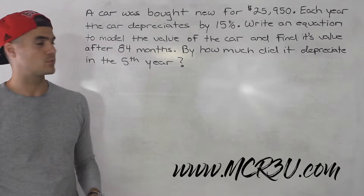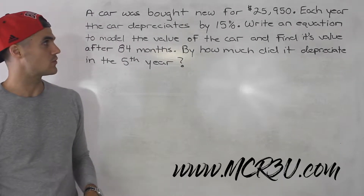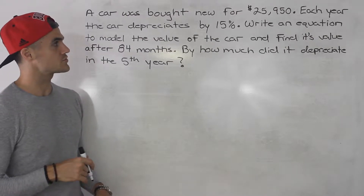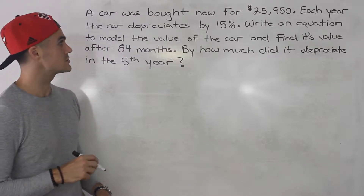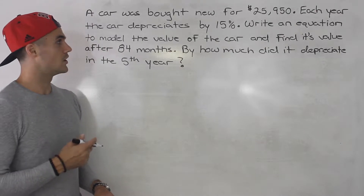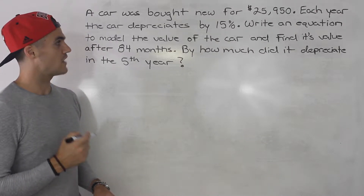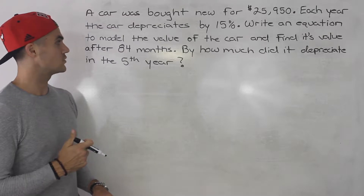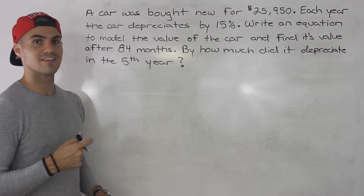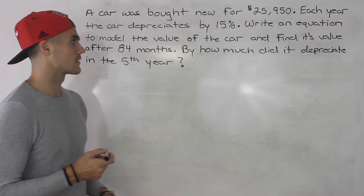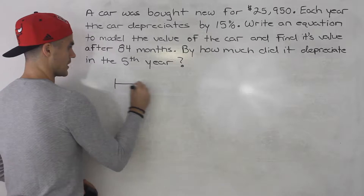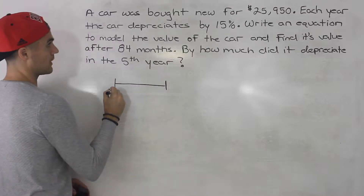Welcome back. Moving on to another word problem: a car was bought new for $25,950. Each year the car depreciates by 15%. We need to write an equation to model the value of the car, find its value after 84 months, and determine how much it depreciated in the fifth year. Let's show this on a timeline.